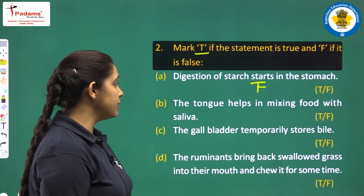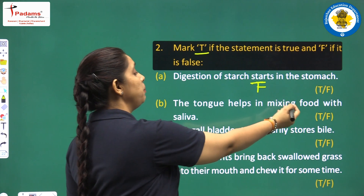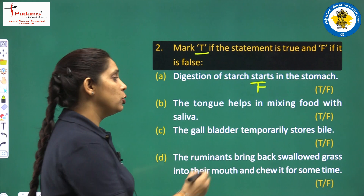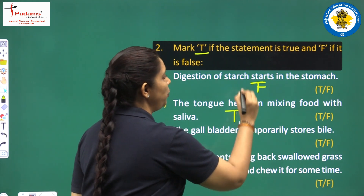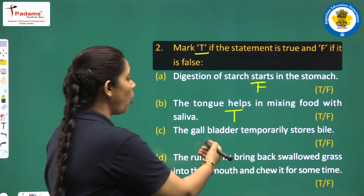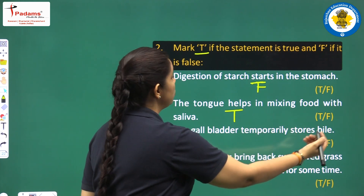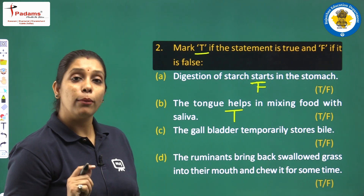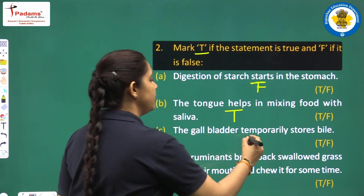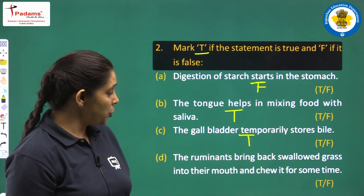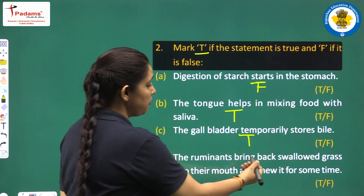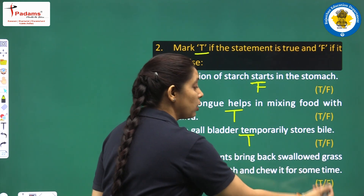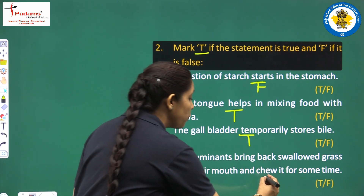The next one: the tongue helps in mixing food with saliva. Yes, this is the main function of the tongue, so it is true. The next one: the gall bladder temporarily stores bile. Yes, bile juices are secreted by the liver and stored in the gall bladder, so it is true. The next: ruminants bring back solid grass into their mouth and chew it for some time — that is true.